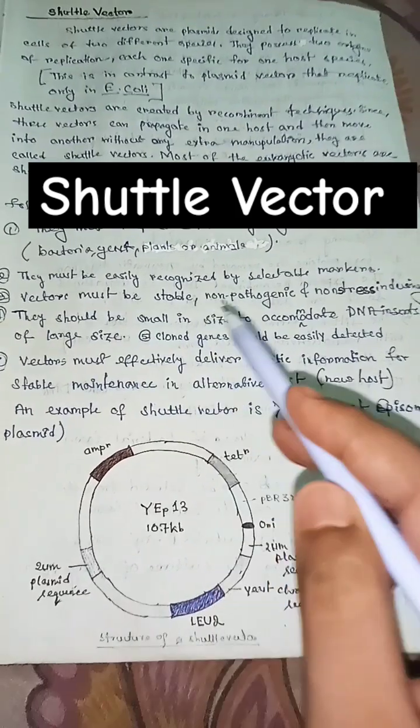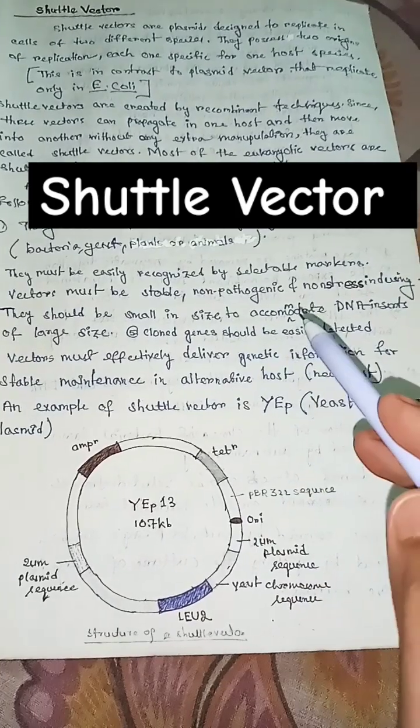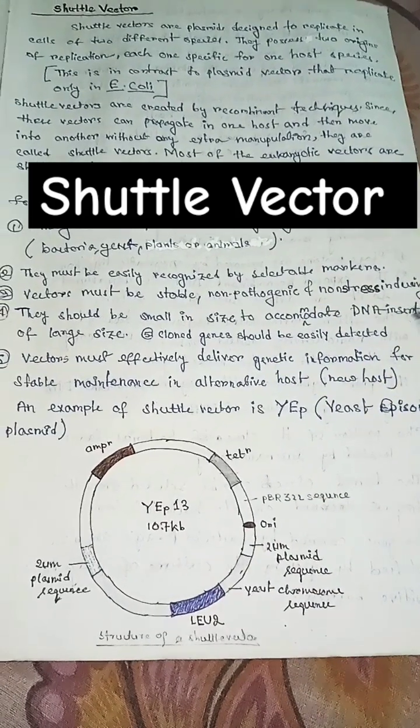They must be easily recognized by selectable markers. Vectors must be stable, non-pathogenic, and non-stress-inducing.